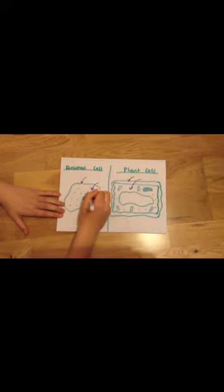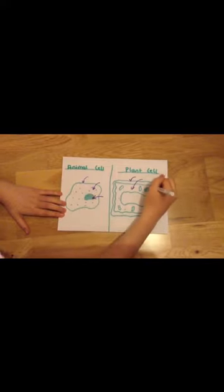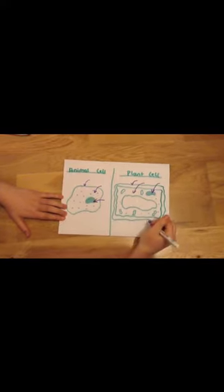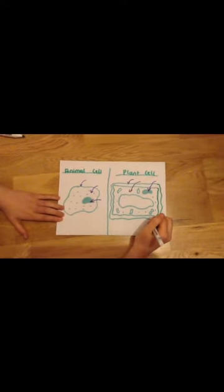Both cells have a nucleus. This is the control center of the cell. It contains a special chemical called DNA. DNA contains an instruction on how the cell works.